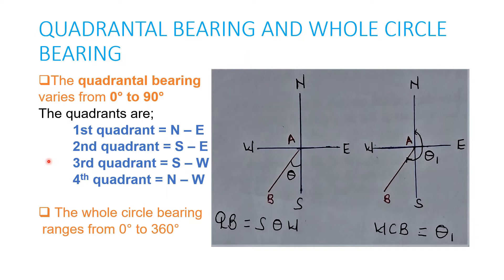If you are new to this channel, stay there, like, subscribe, and don't forget to leave a comment. Now, if this is our bearing and we have the poles — the north and the south pole — for us to have a Quadrantal Bearing, this is our line AB.